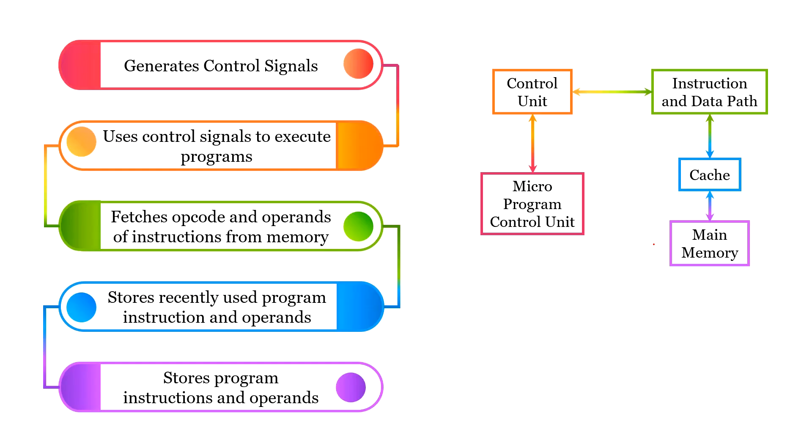CISC architecture has two memories: main memory and microprogram control memory. Main memory has a program that has to be executed, whereas microprogram control memory stores microprograms that generate control signals that are required for execution of the program in main memory.